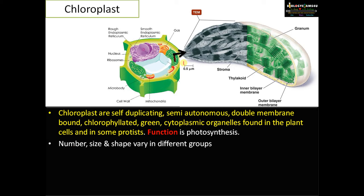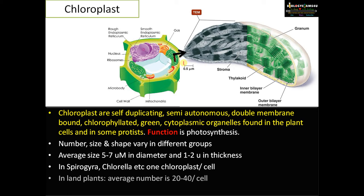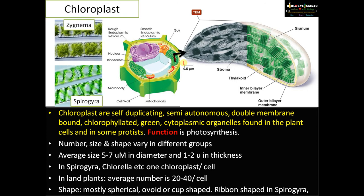Chloroplast number, size and shape vary in different plants. Average size is five to seven micrometers in diameter and one to two micrometers in thickness. In Spirogyra and Chlorella, there is one chloroplast per cell. In land plants, mesophyll cells often average 20 to 40 chloroplasts. Shape is mostly spherical; it may be cup-shaped. In algae like Zygnema it is stellate or star-shaped, whereas in Spirogyra it is ribbon-shaped.